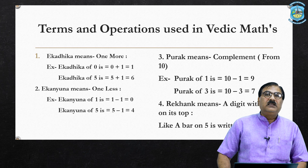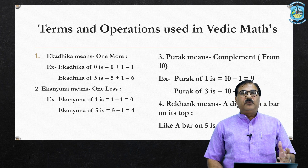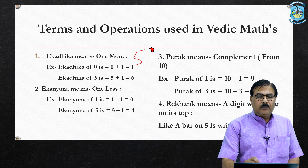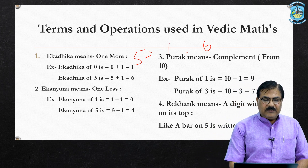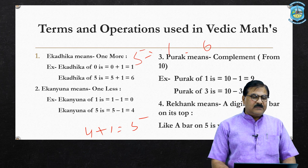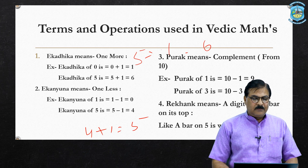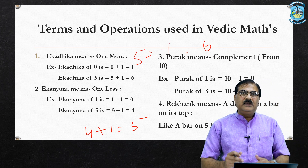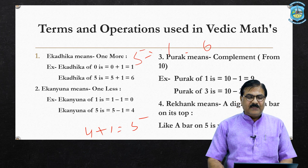The first term is Ekadhika, meaning 'one more.' For example, the Ekadhika of five is five plus one, which equals six. The Ekadhika of four is four plus one, which equals five. The second term is Ekanyuna, meaning 'one less.' So Ekanyuna of one is zero (one minus one equals zero), and Ekanyuna of five is four (five minus one equals four).